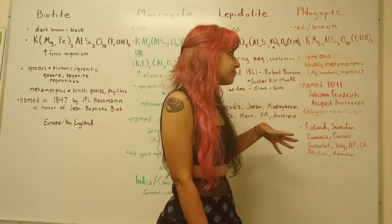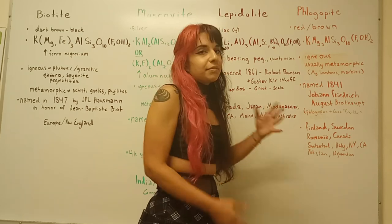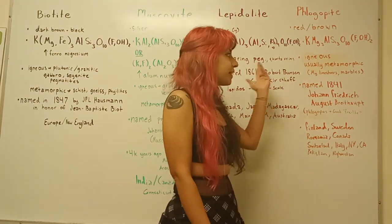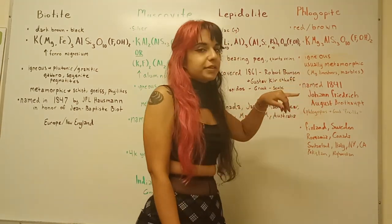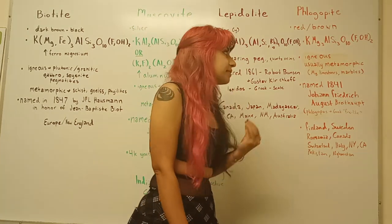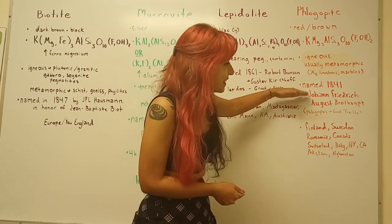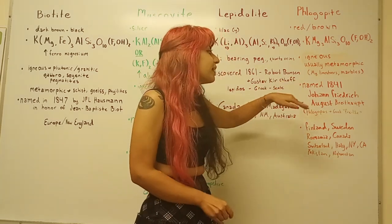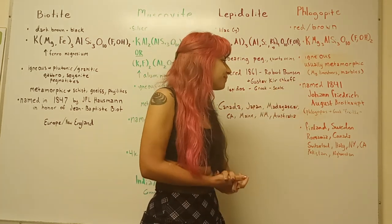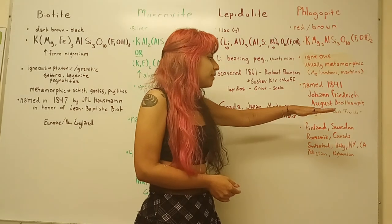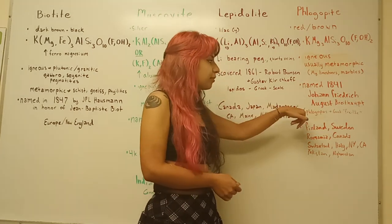You can find it in igneous rocks, as the rest, and then metamorphic, but this one you'll find it mostly in magnesium-rich limestones and marbles. And it was named in 1841 by this guy. I'm not even gonna try. We'll just call him Johan. And that was from the Greek phlogopus, which means fire-like.